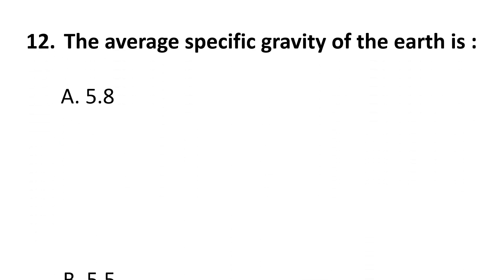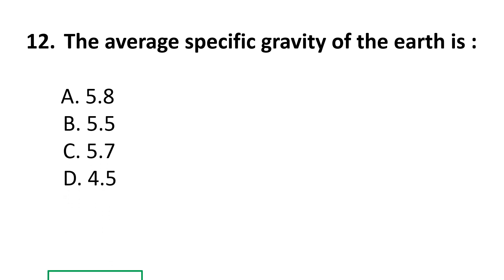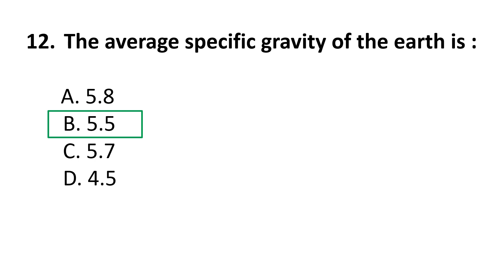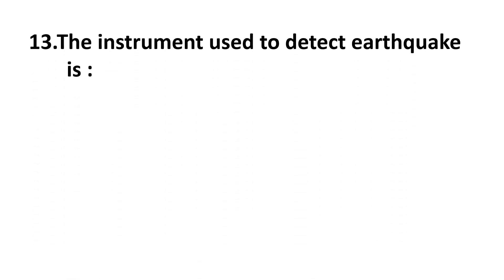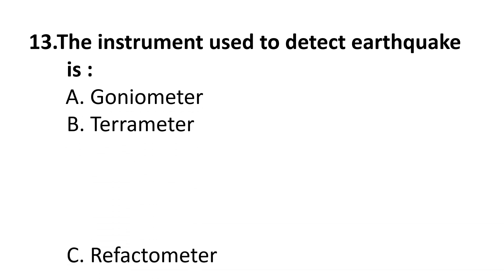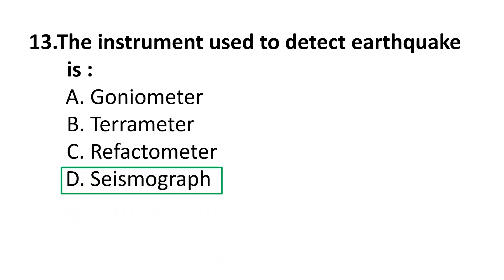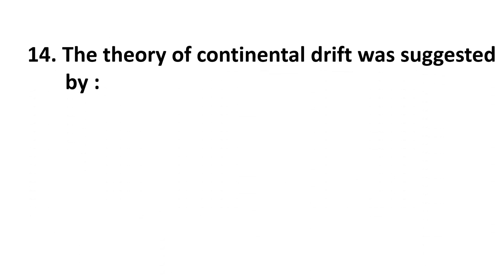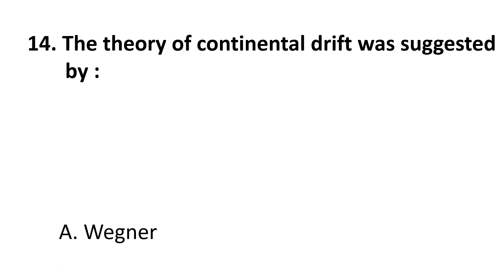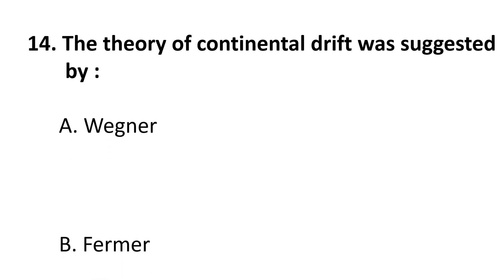Question 12: The average specific gravity of the earth is — A) 5.8, B) 5.5, C) 5.7, D) 4.5. The correct answer is B) 5.5. Question 13: The instrument used to detect earthquakes is — choices are: A) Goniometer, B) Tarameter, C) Refractometer, D) Seismograph. The correct answer is D) Seismograph.